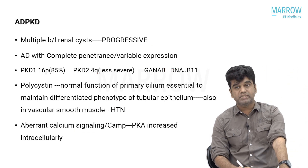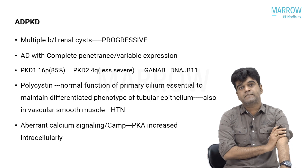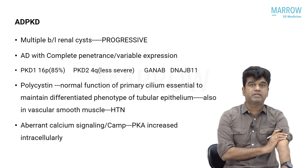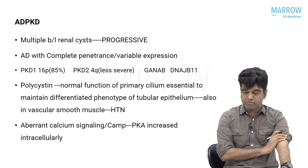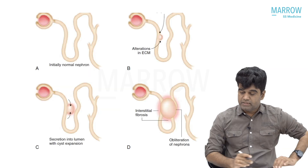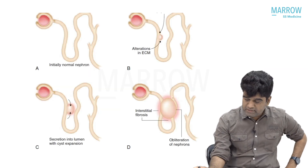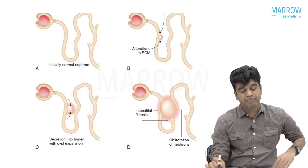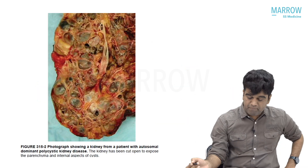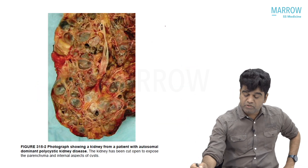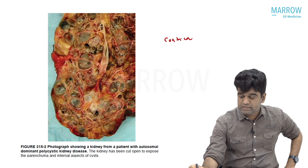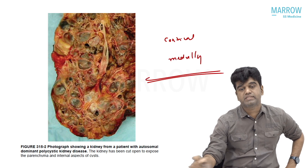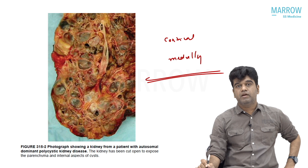V1 receptor is on the smooth muscle, liver, and platelets. V2 is on the endothelium and on the basolateral membrane of the collecting duct. V3 is on the pituitary for ACTH release. There is also alteration in the matrix and interstitial fibrosis as the cyst increases in size. From Harrison, you can see that the cysts are both cortical and medullary — we have cysts everywhere.